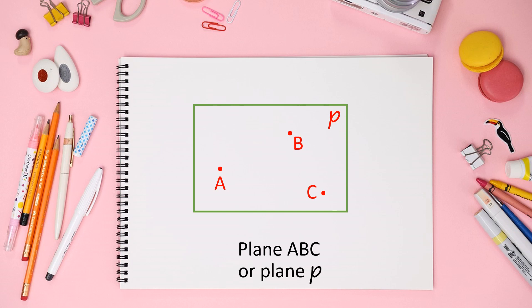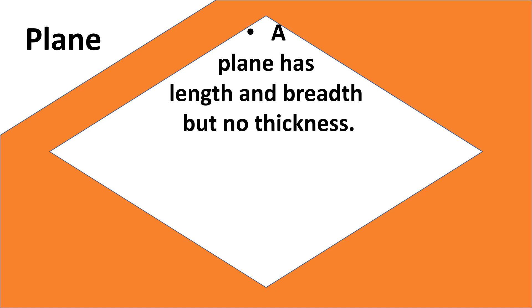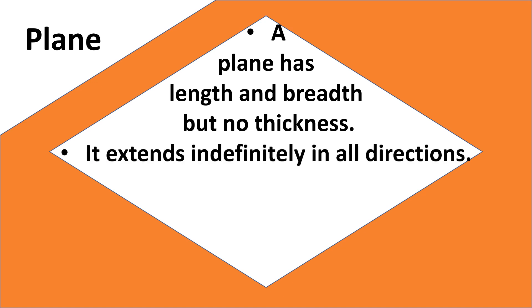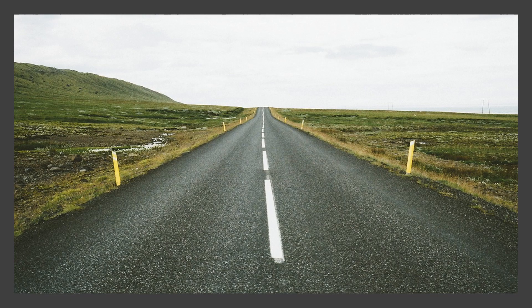What are the qualities of a plane? A plane has length and breadth but no thickness, and it extends indefinitely in all directions. Therefore we can say it has unlimited — or indefinite — length and breadth.